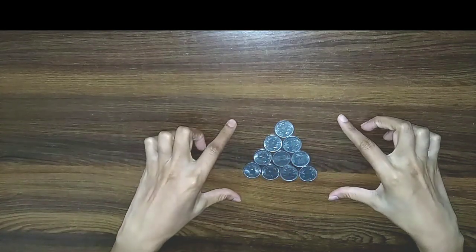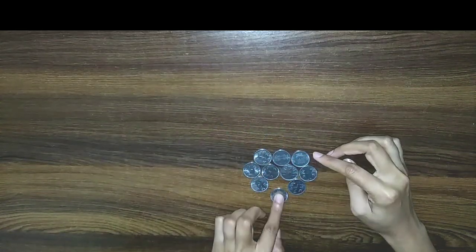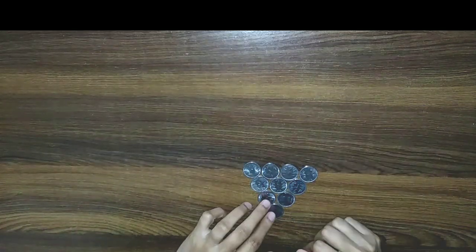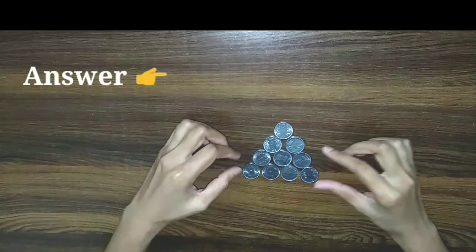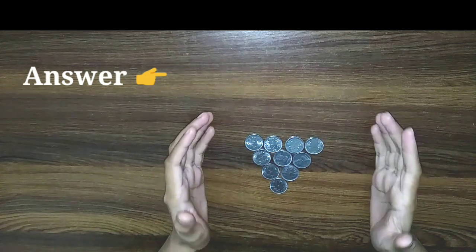Now let's look at the last puzzle. Here we have 10 coins arranged like this, and our task is to make the opposite arrangement — the only rule is we can move only three coins. Originally we have this shape, and you just move these two coins and put them here, then move this coin here. Task done! I hope you enjoyed this video — let me know in the comments which puzzle is your favorite. We'll meet in the next interesting video.